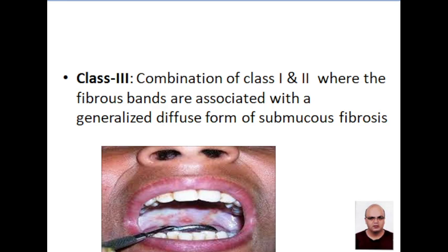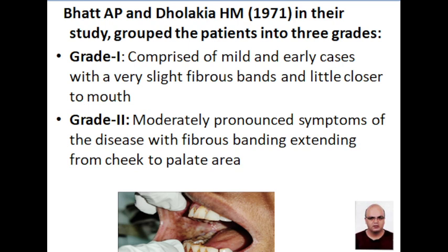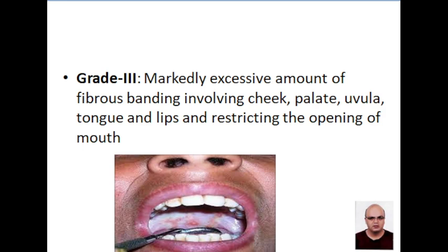Class three is a combination of classes one and two, where fibrous bands are associated with a generalized and diffuse form of mucosal fibrosis. Dollachia classified OSMF into three grades. In grade one, slightly small fibrous bands are seen. In grade two, there are pronounced symptoms of the disease with fibrous bands extending from the cheek to the palate area. Grade three shows an excessive amount of fibrous banding involving all anatomical areas of the mouth.